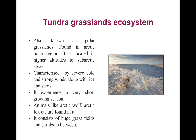Tundra grassland ecosystem, also known as polar grasslands, is found in Arctic polar regions at higher altitudes up to sub-arctic zones. It is characterized by severely cold and strong winds along with ice and snow, with a very short growing season. One can observe Arctic wolves and Arctic foxes, with vast grass fields and shrubs in between.